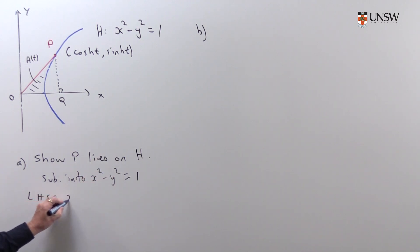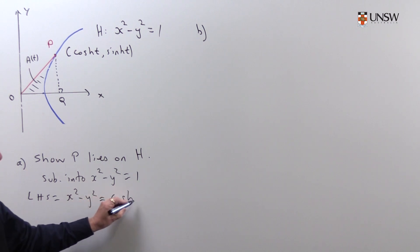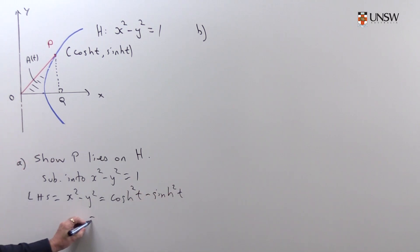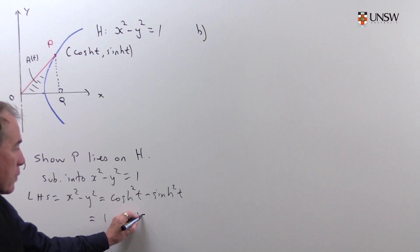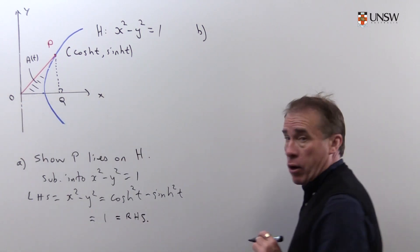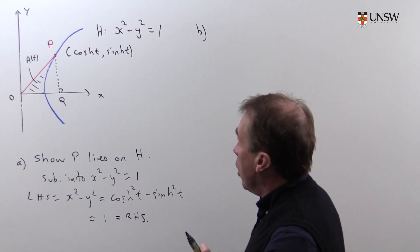So the left-hand side would be x squared minus y squared. I plug it in, so that's cosh squared t minus sinh squared t. But you know from your hyperbolic functions that cosh squared minus sinh squared t is 1, and that's the right-hand side.